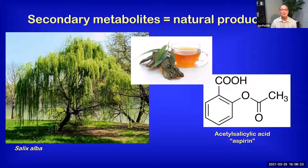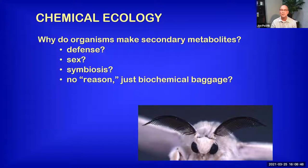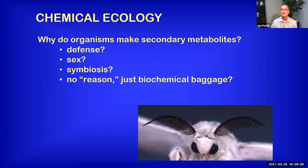The questions that chemical ecologists pose are: why do organisms make these compounds? They clearly don't make them for us. Because making these compounds requires energy, common questions include: are they used for defense? Are they important for sexual reproduction — for example, the moth responding to volatile secondary metabolites used as pheromones? Are they involved in mutualistic symbiosis where an organism controls symbionts in their own bodies? Or are they just biochemical baggage — essentially a dead end? This is a perfectly legitimate possibility as well.